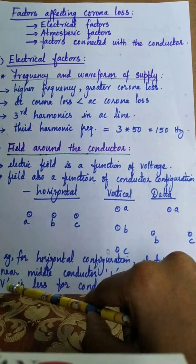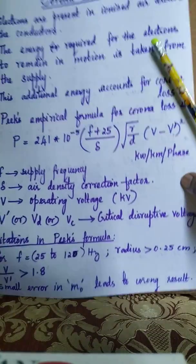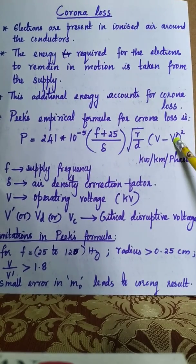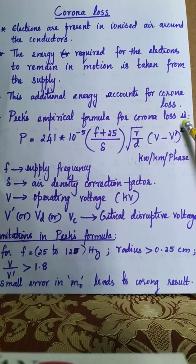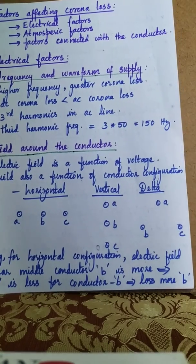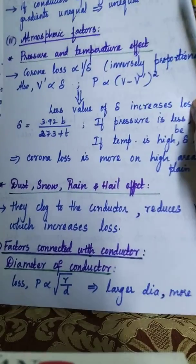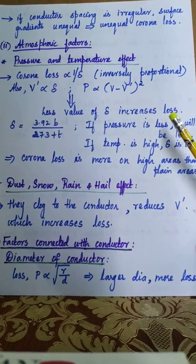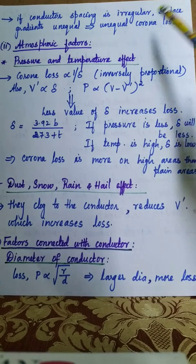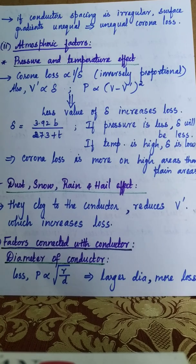If V' is less, power loss is more on conductor B, because power loss is proportional to (V − V')². With smaller V', the term (V − V')² increases, which increases the loss on the middle conductor B. Also, if conductor spacing is irregular, the corona loss occurring on various conductors will be unequal, because lesser spacing causes higher potential gradient, resulting in unequal potential gradients at the conductor surfaces and hence unequal corona loss.